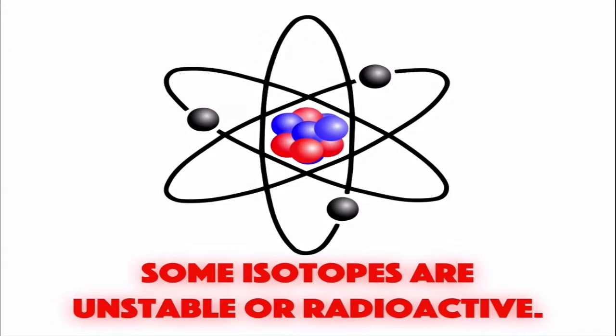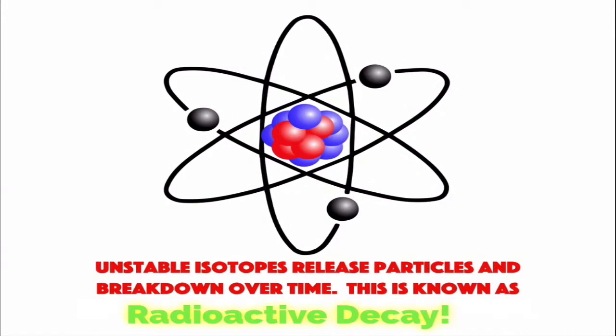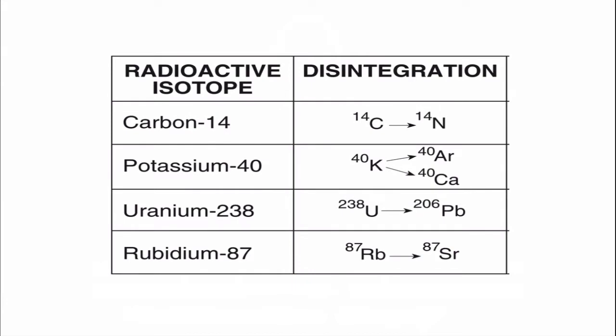And because of that they break down and release particles over time. This is known as radioactive decay. Radioactive decay is a predictable and irreversible process. On the first page of our earth science reference tables, we have four radioactive isotopes listed and their decay products, what they are converted into over time.